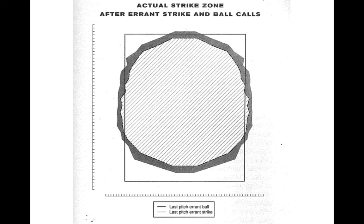The umpire may or may not have been aware that he missed the call. Looking at the two different strike zones: the inner zone, the one that is cross-hatched, is the strike zone where the previous pitch was a ball that was actually called a strike. You can see the umpire is being a little pickier — think of it as a makeup call where the umpire's strike zone has shrunk because he was relatively generous with the previous call.